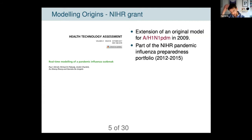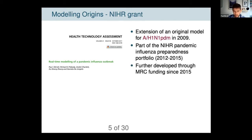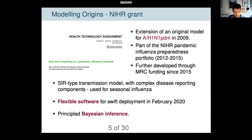There was also an NIHR grant which allowed us to develop software — a flexible pandemic flu modelling framework. It's around 10,000 lines of code to do something that could probably be done with bespoke code in about 100 lines, but because we want to capture a wide range of possible modelling scenarios, it's much more complicated. This was a mothballed project, allowing us to develop the code and store it away. The MRC carried on supporting it after 2015. It's an SIR-type transmission model with complex disease reporting components, trialled on seasonal influenza. So when in February 2020 we needed to roll out real-time modelling, we had flexible software we could minimally adapt and swiftly deploy.